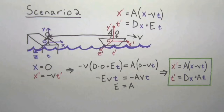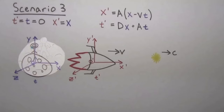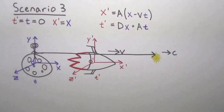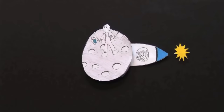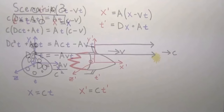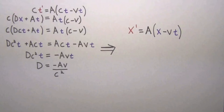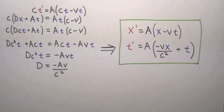For the next two scenarios, we look back at our rocket ship and astronaut. At t equals t prime equals zero, we launch our rocket ship with a constant velocity v in the x direction, and also emit a light pulse in the same direction. The astronaut would describe the light pulse's location as x equals ct. Since from the rocket ship's perspective the light is also traveling with velocity c, he would describe it as x prime equals ct prime. Plugging this into our transformation, we get that d equals minus av over c squared. Our newest transformation is x prime equals a times x minus vt and t prime equals a times t minus vx over c squared.